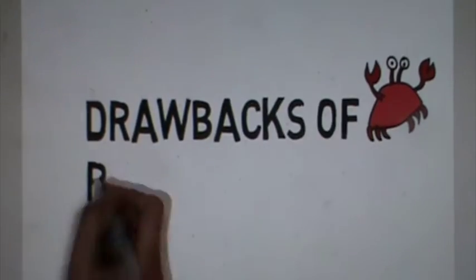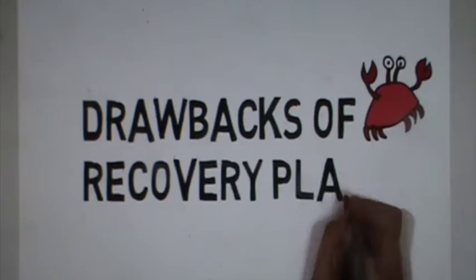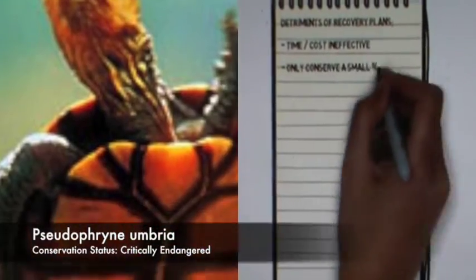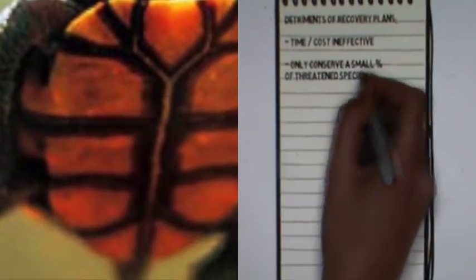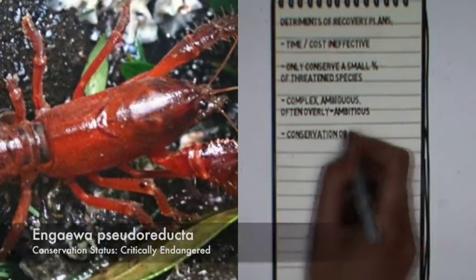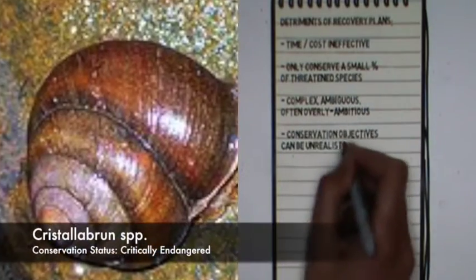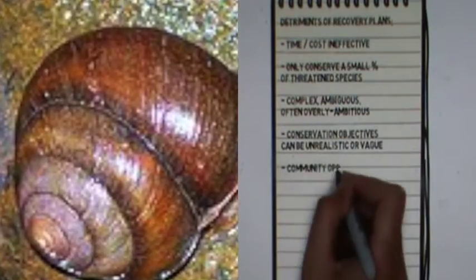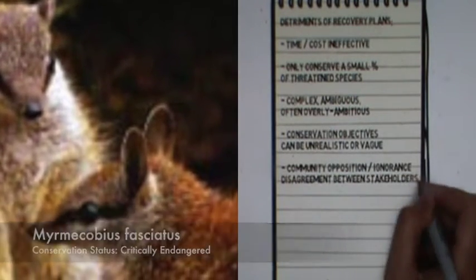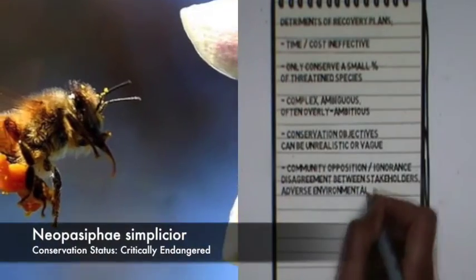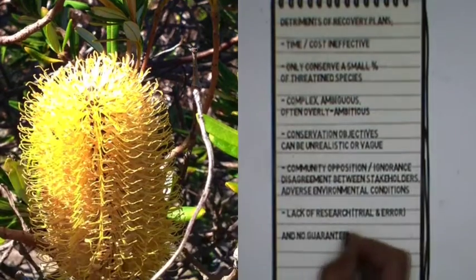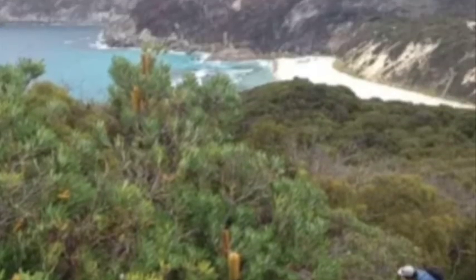However, several drawbacks of recovery plans include: they are time and cost ineffective, as they only conserve a small proportion of threatened species at high cost. They are often complex, ambiguous and overly ambitious, and the conservation objectives can be either unrealistic or vague. Community opposition or disagreement between stakeholders, as well as adverse environmental conditions like fire, can hinder success. There is often a lack of initial research and no guarantee of success despite resource allocation.